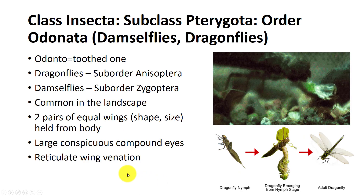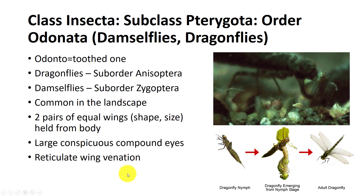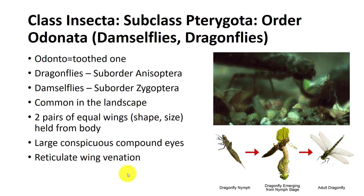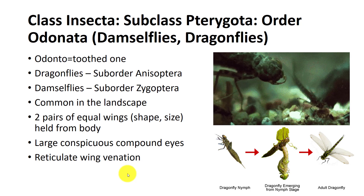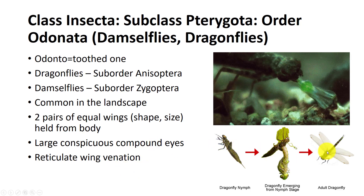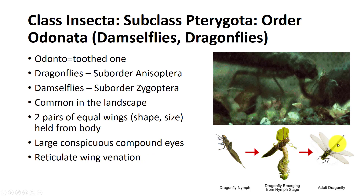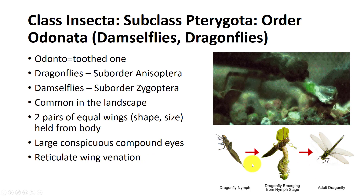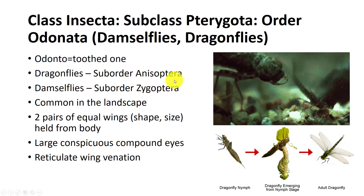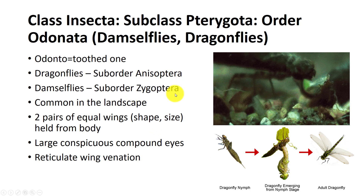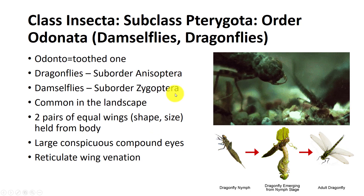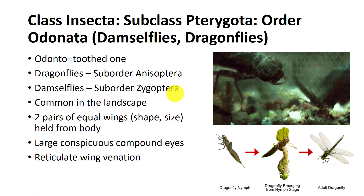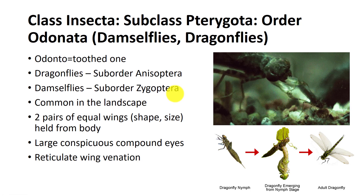The order Odonata, meaning tooth ones, includes some of the most ancient and beautiful insects that ever roamed the earth, as well as the largest flying invertebrates that have ever lived. The most common families are Anisoptera, which includes dragonflies, and Zygoptera, which includes damselflies. Many characteristics distinguish Odonata from other groups of insects.